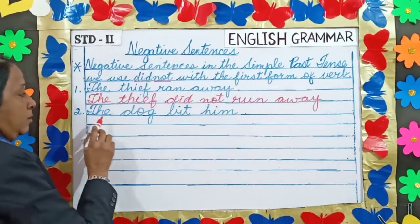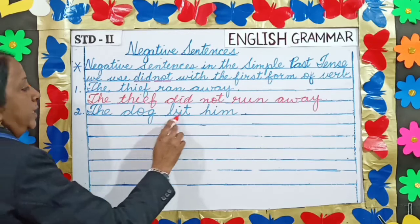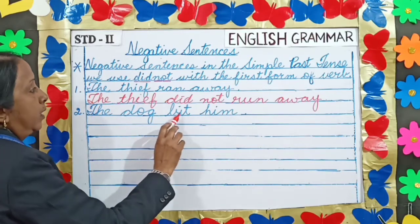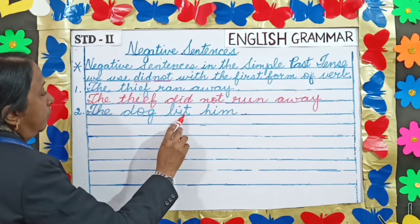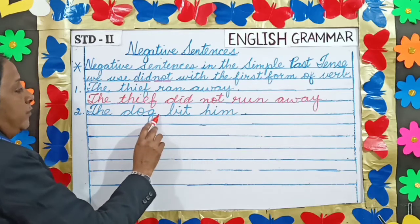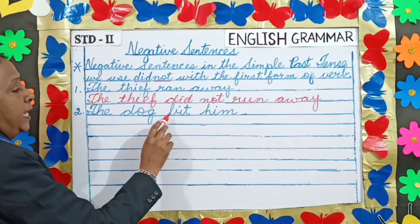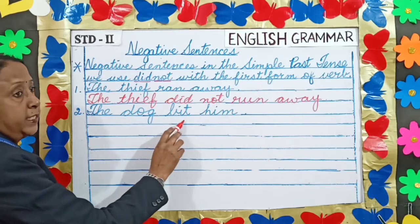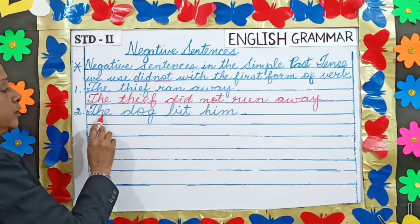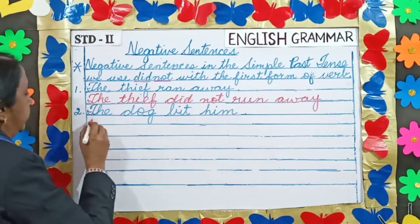Number two: 'The dog bit him.' Here 'bit' is the past form of the verb, so we add 'did not' and 'bit' changes back to 'bite.' The answer is 'The dog did not bite him.'